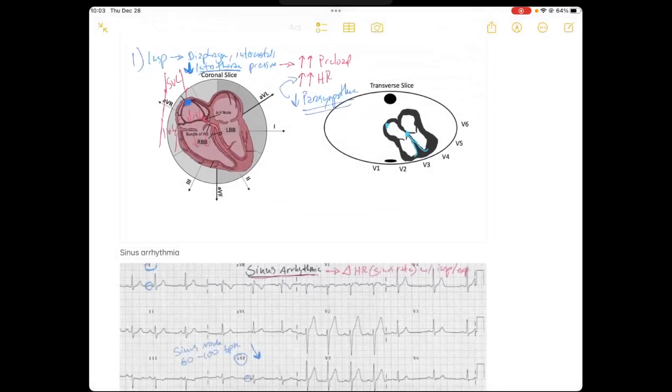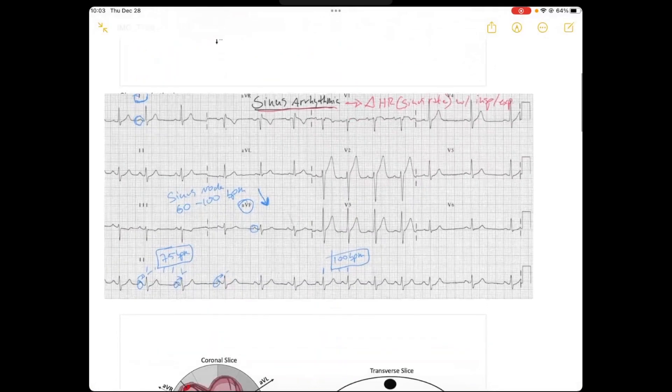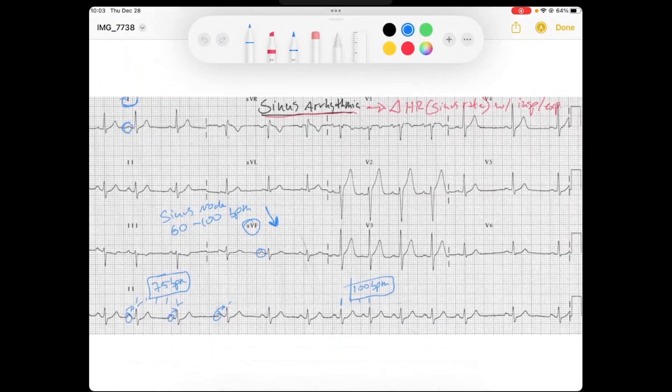So on the EKG, you can see when we inspire, we would say that this zone, we see this increase in heart rate here. This is due to inspiration because we see this heart rate, it's getting faster. So this would make sense. We know that 5 little boxes 1, 2, 3, 4, 5, is 1 second.